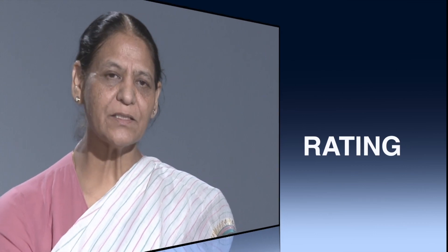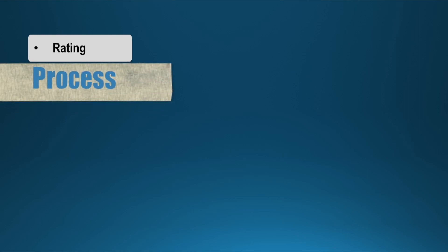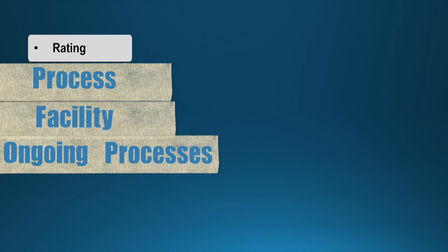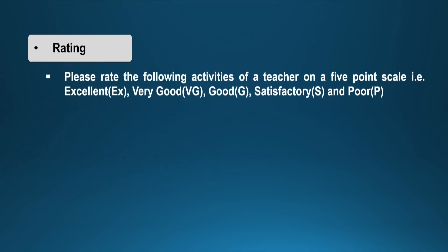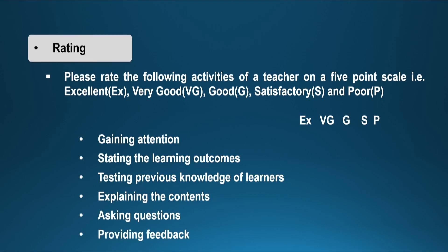There can be rating type items where the observer tries to rate the process, rate the facilities, and rate the ongoing processes on a scale — maybe 5-point, 7-point, or 9-point. You can see the difference between the checklist and the rating: now the observer has to rate how the teacher gained the attention — whether it was excellent, very good, good, satisfactory, or poor. Likewise, how the teacher stated the learning outcomes, how he tested the previous knowledge, how he explained the contents, asked questions, and provided feedback. So the observer is now rating the phenomena on a 5-point scale.